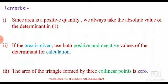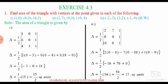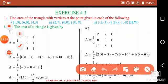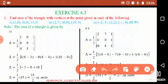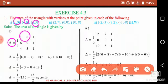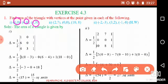Let me begin Exercise 4.3. The first problem: find the area of a triangle whose vertices are (1, 0), (6, 0), and (4, 3). Applying the determinant formula: Δ = 1/2 times the determinant with first row (1, 0, 1), second row (6, 0, 1), third row (4, 3, 1). Evaluating this determinant along the first row: 1 times (0·1 − 3·1) = −3.